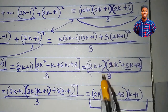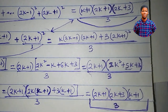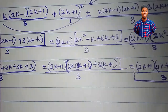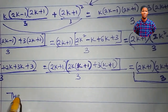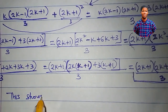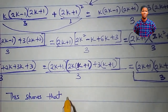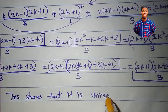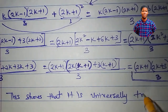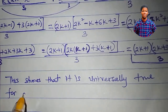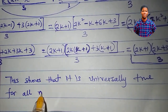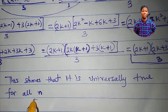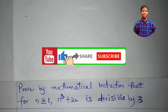This expression is exactly what we have on the right hand side for n equal to k plus 1. So it is true for n equal to k plus 1, and therefore it is universally true for all n.